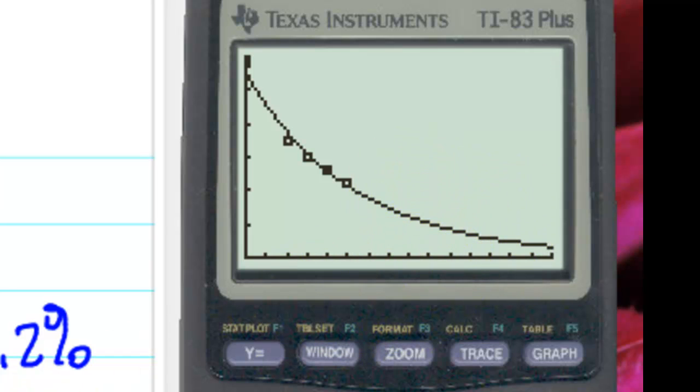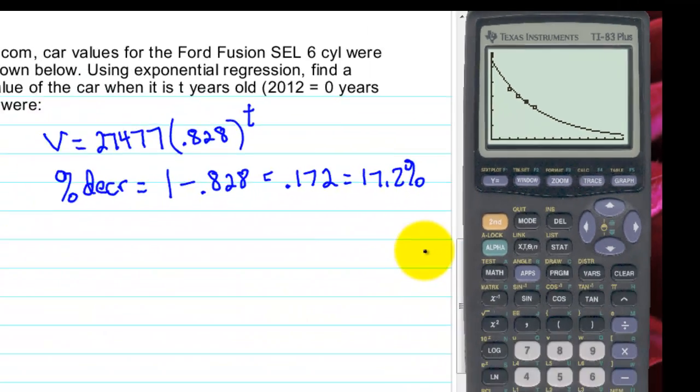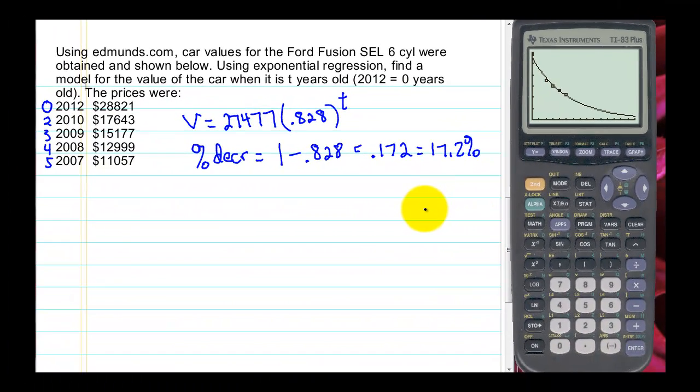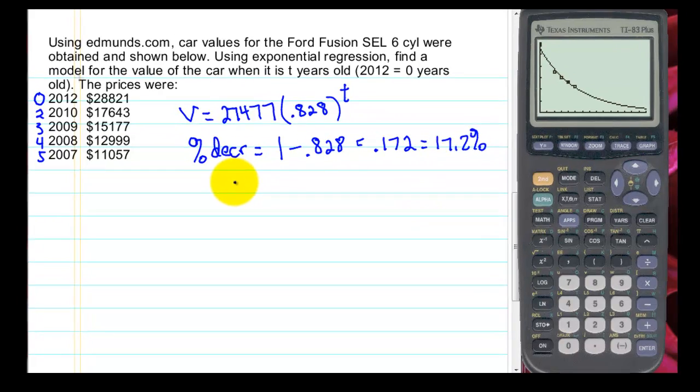Now the last thing we might want to look at here is maybe we want to sell the car when its value is $5,000. So we want to understand how long will it be before the car value is $5,000. Now we could look at our graph and make an estimate, but we want to do a calculation here, and we can use solving an equation. So we want to find when the value will be $5,000.